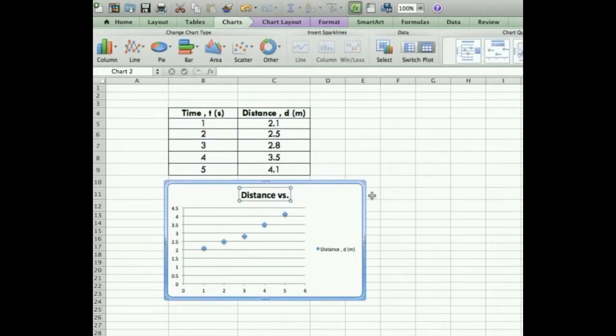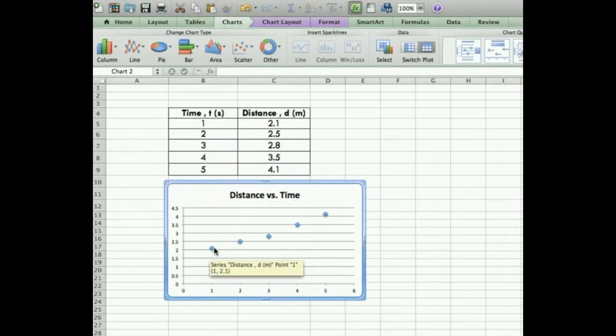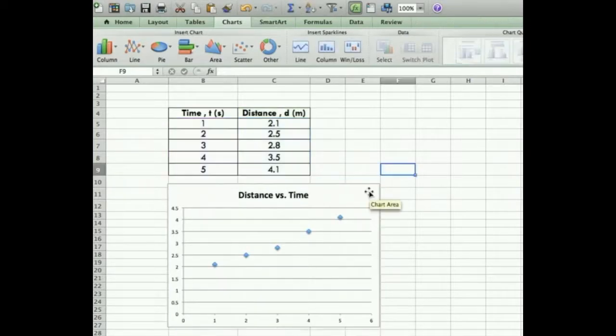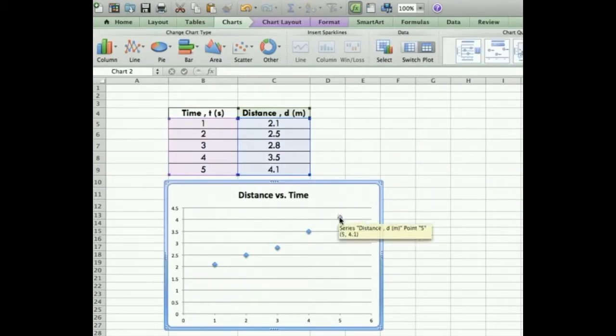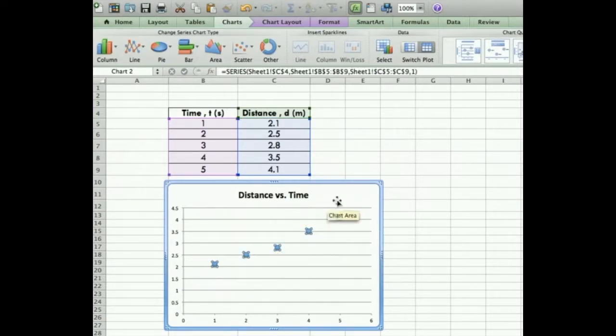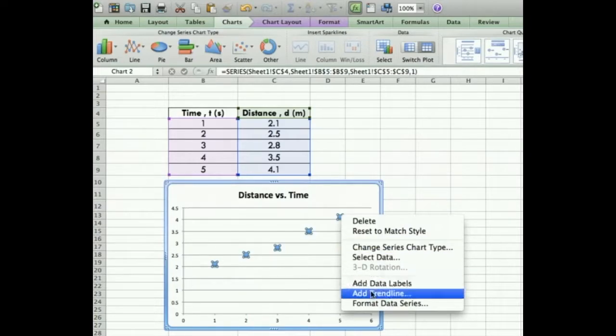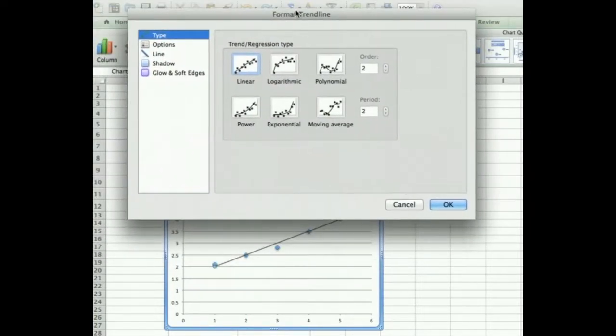It's always a good idea to label your graphs and charts. I'm going to call this distance versus time. This looks like it would be a positive linear relationship, but to determine with any certainty, I want to do a linear regression analysis and see what my r value is. Conveniently, Excel does that for you. Just click any point on the graph, right-click, go to add trend line, and this menu will pop up.